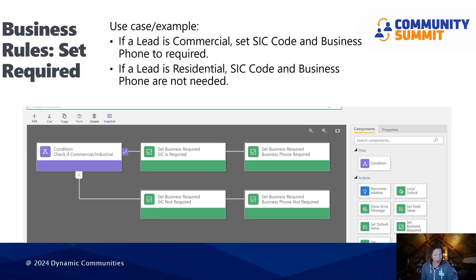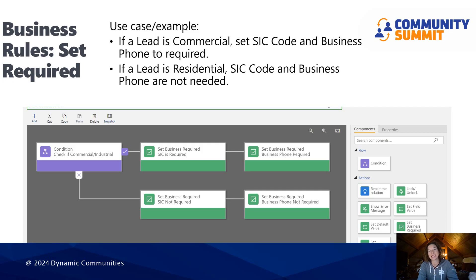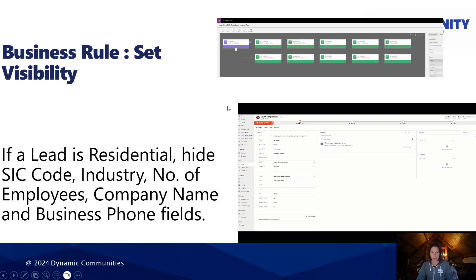Next up is set required. I think this is the most used and well understood of all the business rule actions. You will configure your condition, and once it's met, you can either set a field as required or not required. The example shown here is an organization that tracks leads that are both commercial and residential. When the lead is commercial, I want to set all of the business-centered fields as required. When it's residential, those fields are not required — really helpful in getting the data you need from your users and preventing the overhead of too many required fields at the time of data entry, which will not help with user adoption.